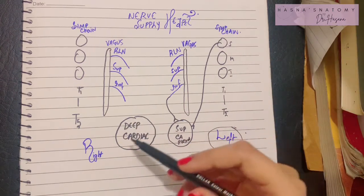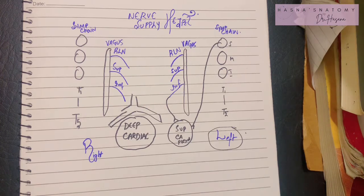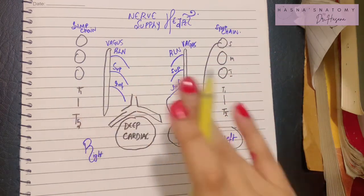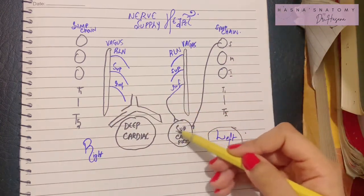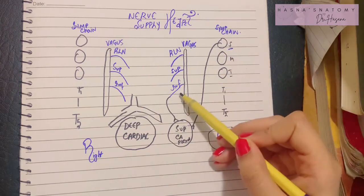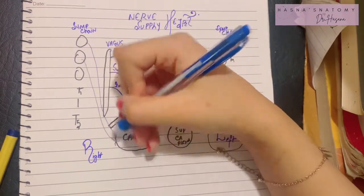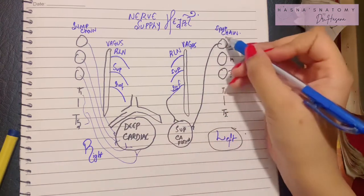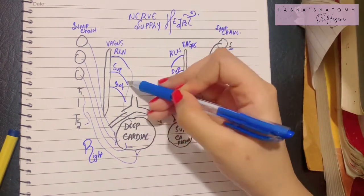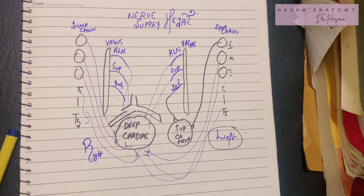The deep cardiac plexus lies beneath the bifurcation of the trachea. It is formed by all of the remaining branches of the right and left sympathetic and parasympathetic supplies — apart from those contributing to the superficial cardiac plexus. It receives branches from the middle and inferior cervical ganglia, T1 to T5 thoracic ganglia, the recurrent laryngeal nerve, and the superior and inferior cardiac branches of the vagus.